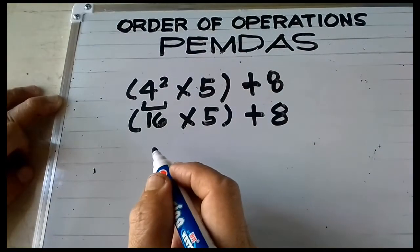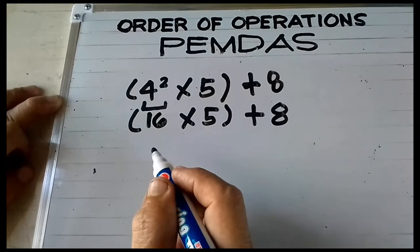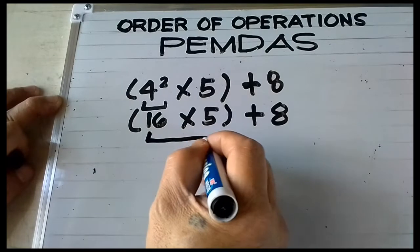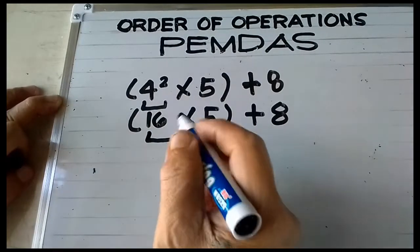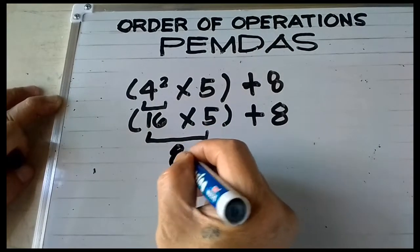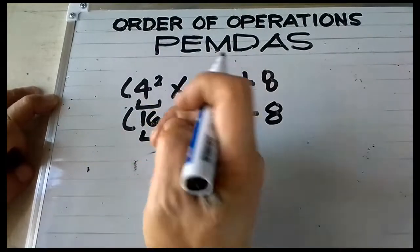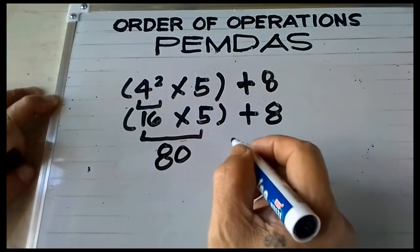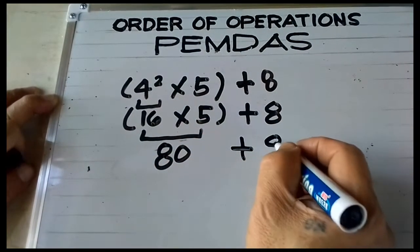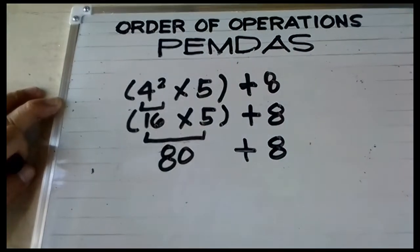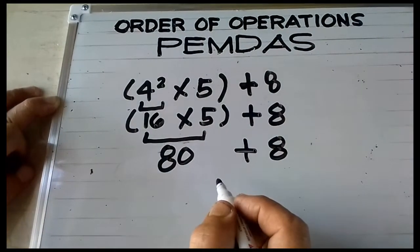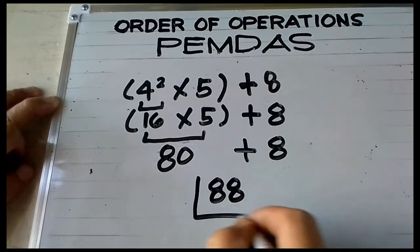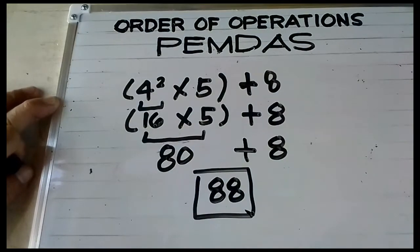Now we have parenthesis — parenthesis always comes first — so 16 times 5 is equal to 80. Bring down addition and 8. Then 80 plus 8 is equal to 88, and this is the final answer.